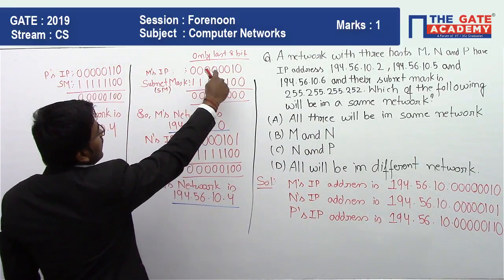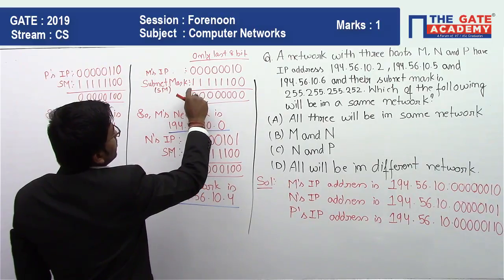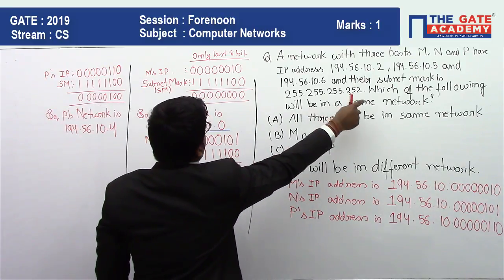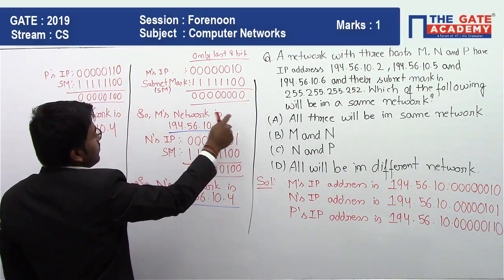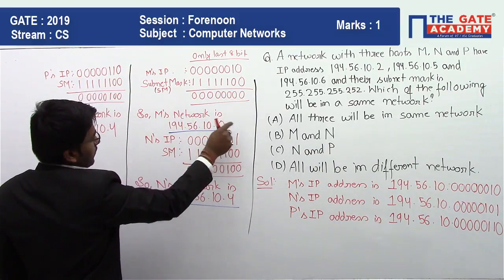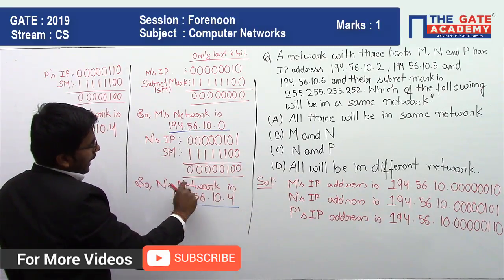Last 8 bits multiplied with the subnet mask 252, its binary presentation, we are getting only zeros. So M's network is this.